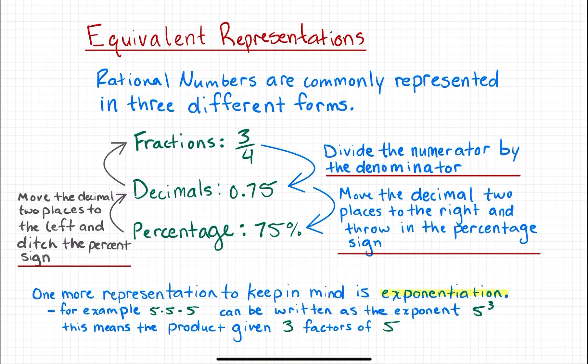Another way is as a decimal, where you see some number to the left and right of a decimal point. Often it's zero to the left, but there's always something to the right. In this case, 0.75. The third way is as percentages. Here are some notes on how to convert numbers between those forms.